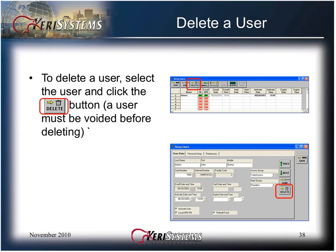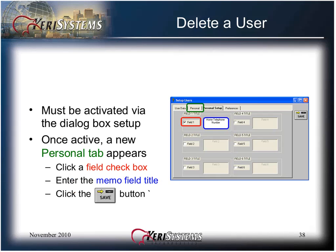To delete a user, select the user by clicking in the last name field and click the Delete button. The user must be voided before deleting. It removes a user and card from the active database, though the user information does remain in archived history files. The personal memo field allows you to define up to six custom memo fields. The new personal memo fields will appear to the far right of the user spreadsheet or in the personal tab of the dialog box. The personal memo fields must be activated via the dialog box setup.